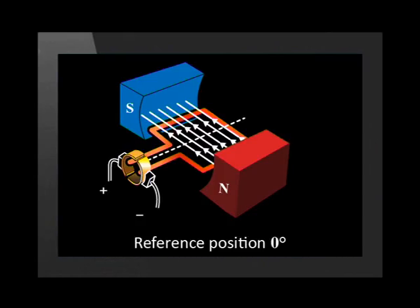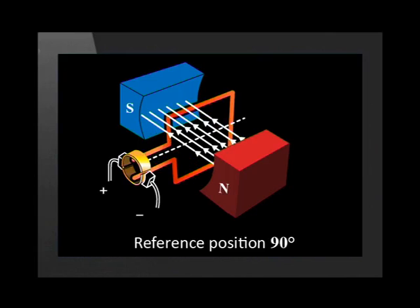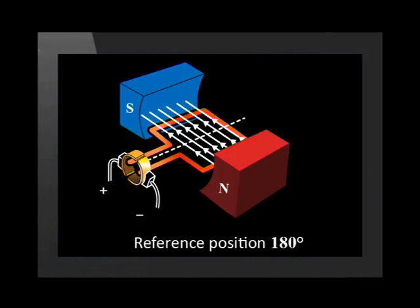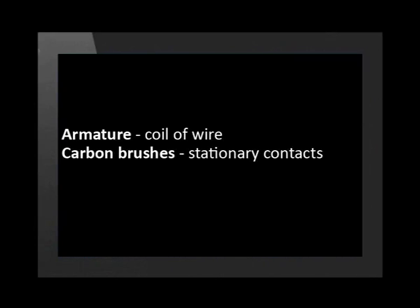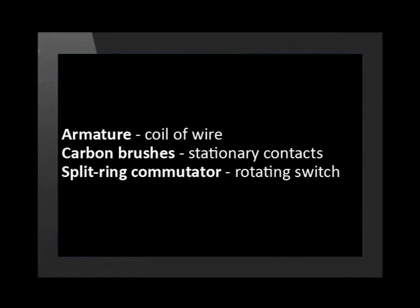When the coil of wire called an armature rotates, it is attached to a split ring commutator, which changes the direction of the current in the coil. See the position of the brushes and commutator at what we will call zero degrees. The brushes are the parts that do not move; the commutator rotates between them. Now the armature rotates to the 90 degree position, then compare it to the situation at 180 degrees and at 270 degrees. Let's go over those parts and their functions: the armature is the coil of wire, the brushes are fixed and made of carbon, and the brushes touch the split ring commutator, which switches the direction of the current in the coil.